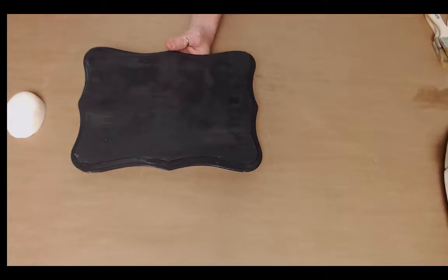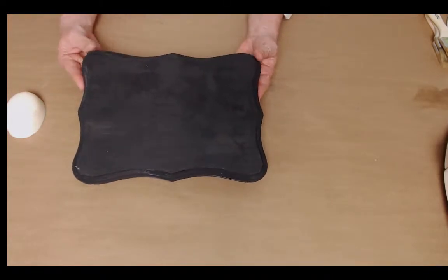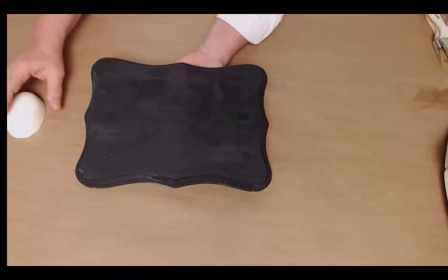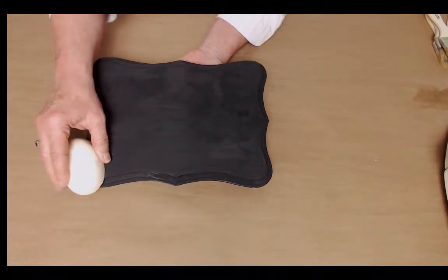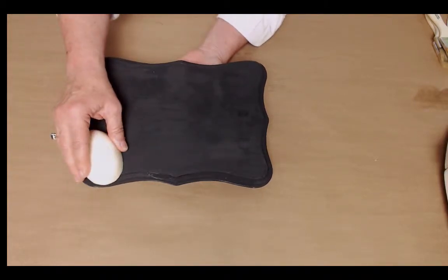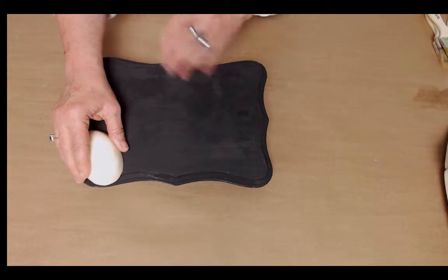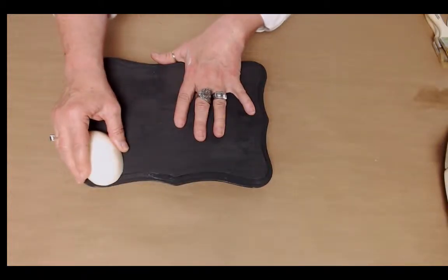As you can see here, we've already got our base coat on, and then I'm going to decide where I want to put the wax. What the wax does is it resists your next top coat of your contrasting color.